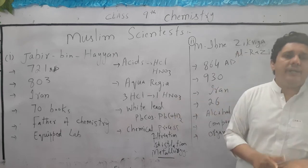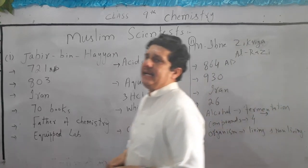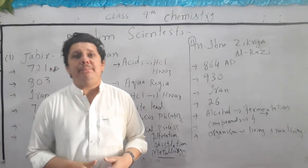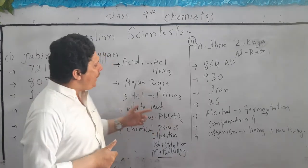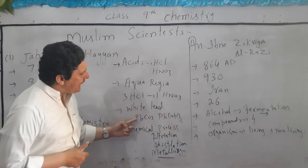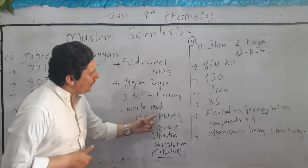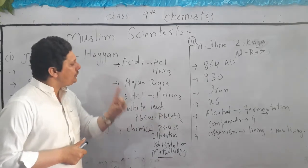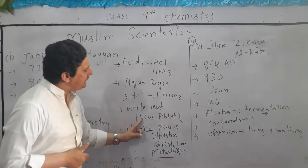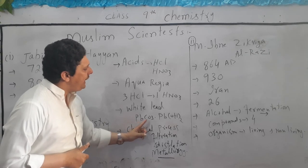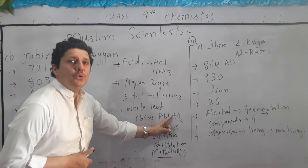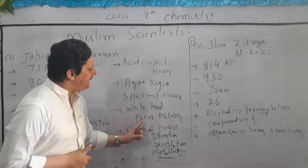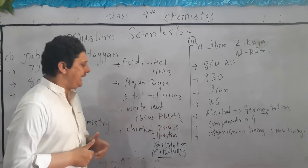He also prepared white lead. Lead is a simple element, but white lead is a combination of lead carbonate and lead hydroxide. These two compounds are lead carbonate (PbCO₃) and lead hydroxide (Pb(OH)₂).